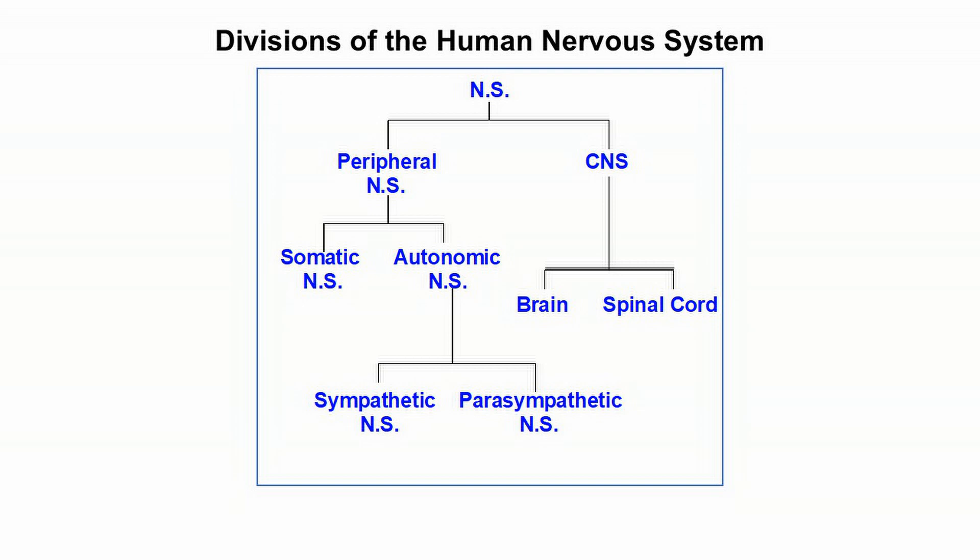We'll talk about those in much more detail later. Right now, the peripheral nervous system is divided into the somatic and autonomic nervous systems, while the autonomic nervous system is divided into the sympathetic and parasympathetic nervous systems. So make sure you know this diagram, and we'll be talking about the different parts of the human nervous system in detail.